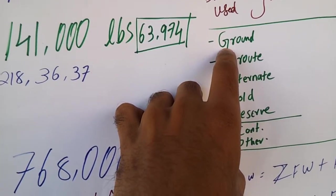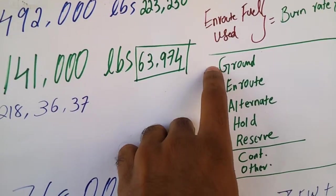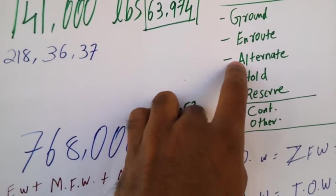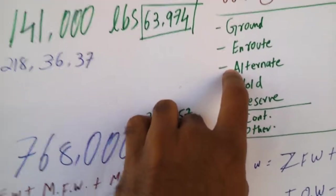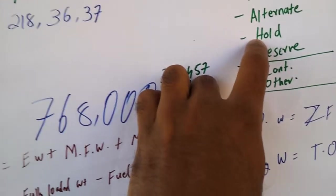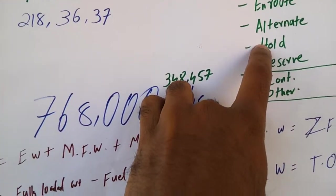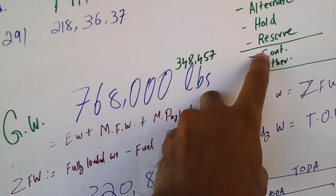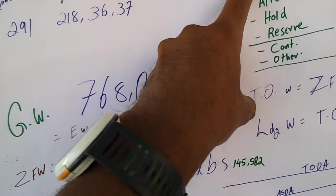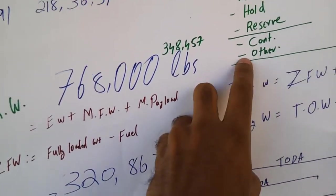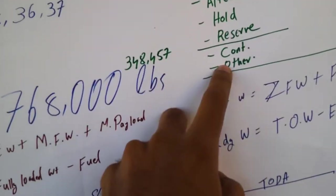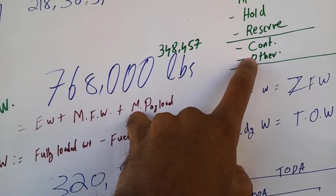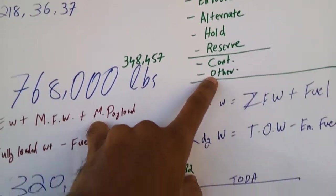It's like ground start and taxi, enroute climb, enroute and descend, alternate which includes missed approach climb enroute and descend, hold 30 minutes of usual hold or 45 minutes whichever the case may be, and the reserve and maybe a contingency of 5% of the enroute fuel. Well, I'm not sure about this contingency of 5% of the whole fuel or the enroute fuel - please correct me if I'm wrong. And some other additional fuel depending on the price if it varies in the destination. If the fuel price is higher in the destination, we should carry the fuel from other airports in order to compensate that high cost fuel.